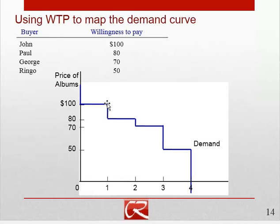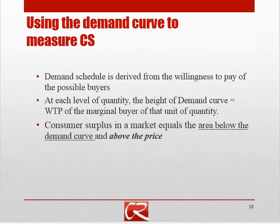The height of the demand curve at each quantity tells us what that buyer's willingness to pay is — specifically the willingness to pay of the incremental or marginal buyer, the last buyer to come into the market. We can use this to measure consumer surplus when we have smooth demand curves. Typically we'll have smooth demand curves rather than a step function, and we look at consumer surplus as the area below the demand curve and above the price. Consumer surplus is willingness to pay minus price, so we take the height of the demand curve and subtract off the price.